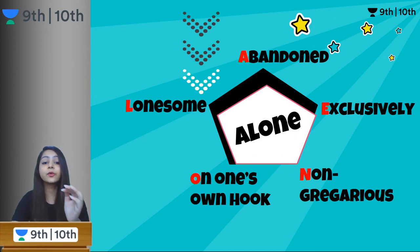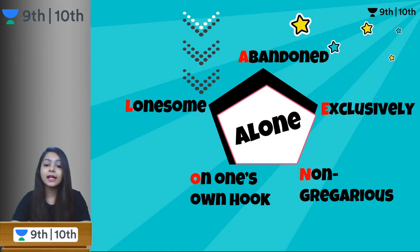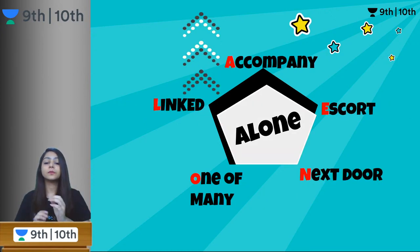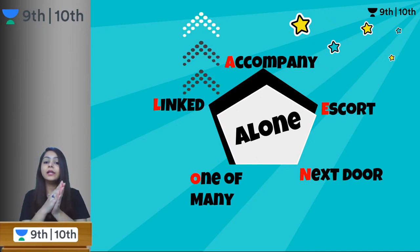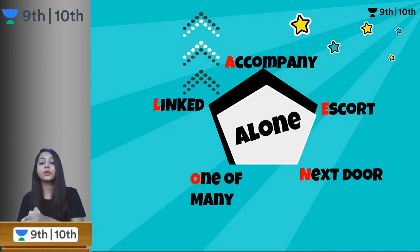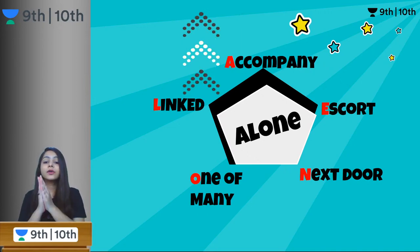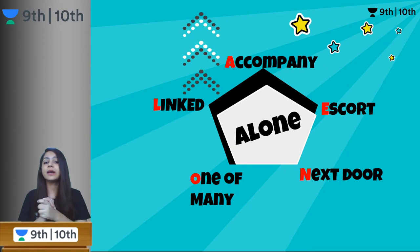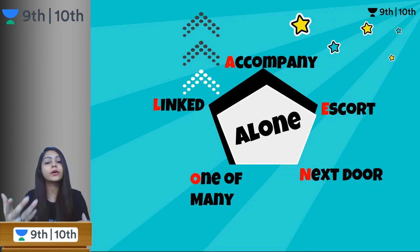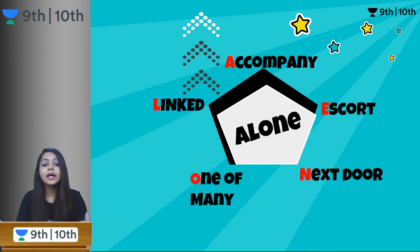Now let us look at the words going away from ALONE — the opposites. When you are accompanied by somebody, you cannot be alone. A for accompany: when somebody is accompanying you, how can you be alone?